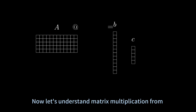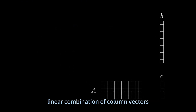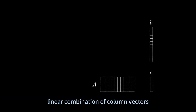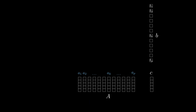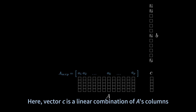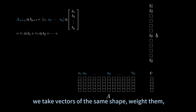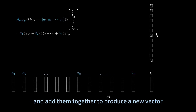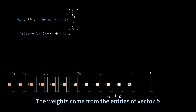Now let's understand matrix multiplication from the linear combination of column vectors. Consider matrix A times B, which gives us a vector C. Vector C is a linear combination of matrix A's columns. A linear combination means we take vectors of the same shape, weight them, and add them together to produce a new vector. The weights come from the entries of vector B.